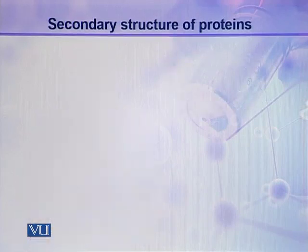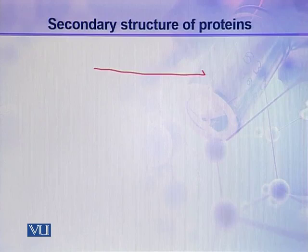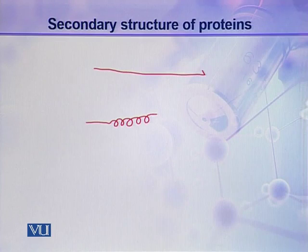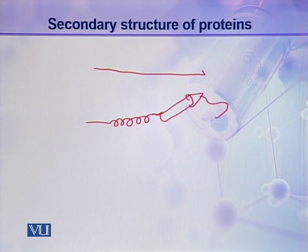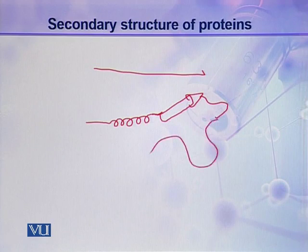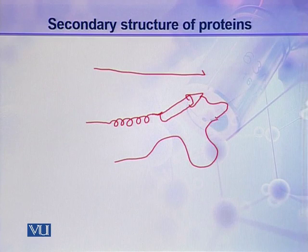For example, here you can see this is a polypeptide chain — it contains a number of amino acids. It is a fully extended polypeptide chain and it can make a coil or helix, it can make a sheet, it can make a turn, it can make a loop. All these changes are local conformational changes and are called secondary structures of the proteins.